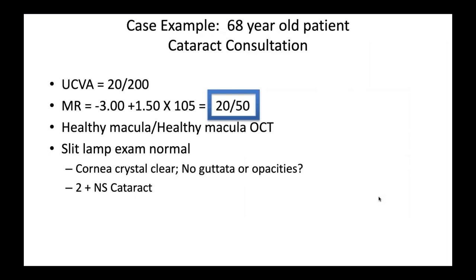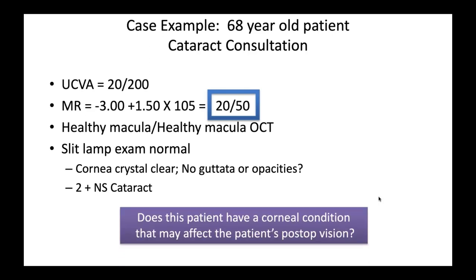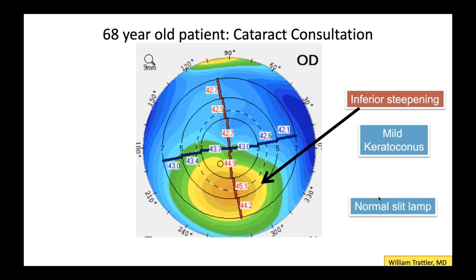Consider this case: a 68-year-old patient with cataracts, best corrective visual acuity of 20/50, normal OCT, clear cornea on slit lamp, and a 2+ cataract consistent with 20/50 vision. Does this patient have a corneal condition that may affect their post-operative vision? Unless you do topography or tomography, you won't know. This patient actually has a small degree of keratoconus — mild inferior steepening. They may end up 20/20 minus or 20/25 after surgery, but if they're having ghosting, they're going to ask what's wrong. It's always better to get the scan and tell them before surgery.